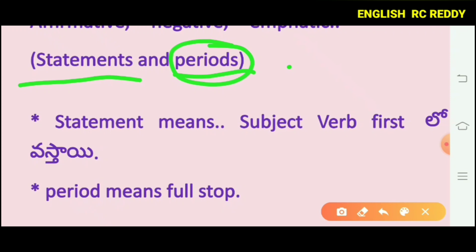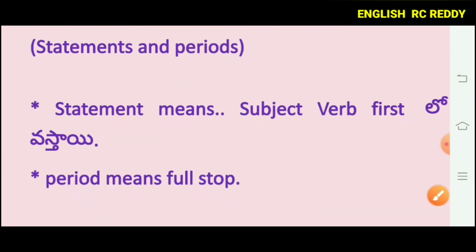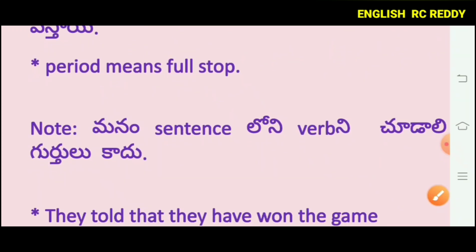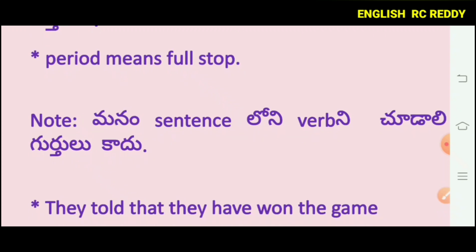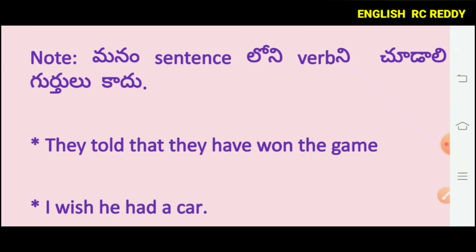Assertive sentence is also called declarative sentence. It is a statement where the subject comes first, followed by the verb. All are common declarative sentences and they end with a full stop.